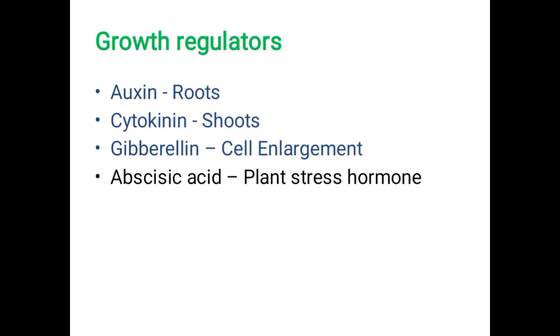Growth regulators include auxins, cytokinins, gibberellins, and abscisic acid. Auxins are plant growth regulators, also called phytohormones, involved in growth and development, and are responsible for root development. Cytokinins are mostly present in shoots. Gibberellins are responsible for cell enlargement. Abscisic acid is also a plant hormone.